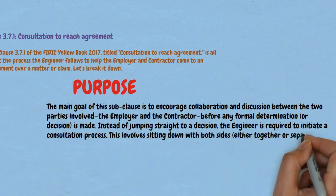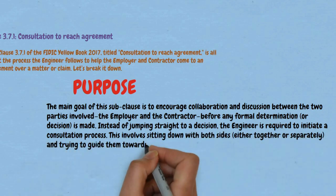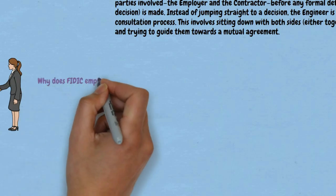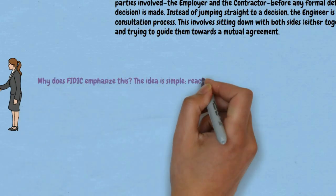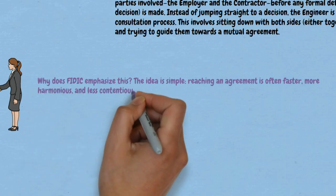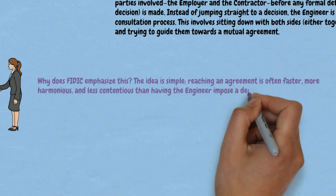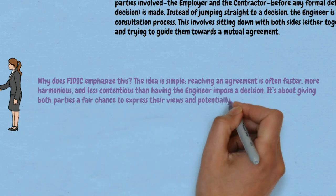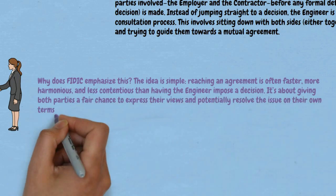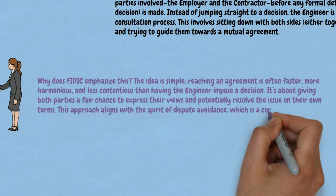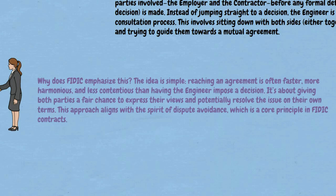This involves sitting down with both sides, either together or separately, and trying to guide them towards a mutual agreement. Why does FIDIC emphasize this? The idea is simple: reaching an agreement is often faster, more harmonious, and less contentious than having the engineer impose a decision. It's about giving both parties a fair chance to express their views and potentially resolve the issue on their own terms. This approach aligns with the spirit of dispute avoidance, which is a core principle in FIDIC contracts.